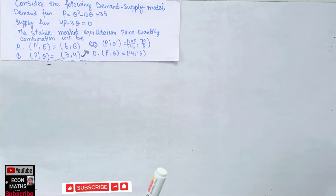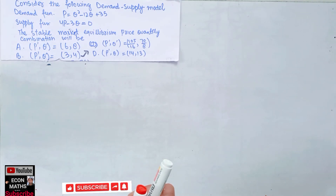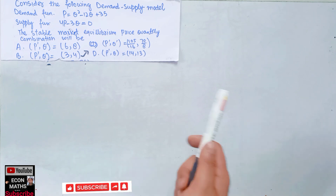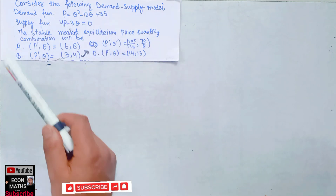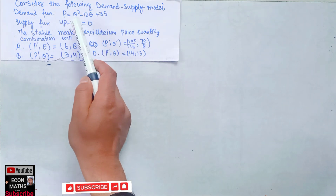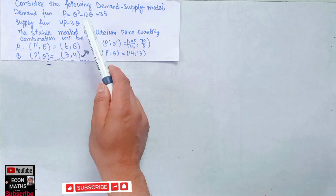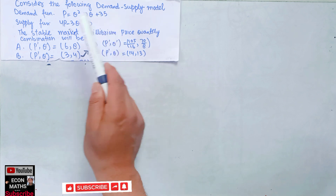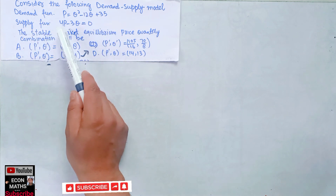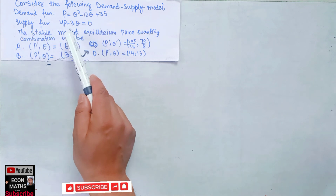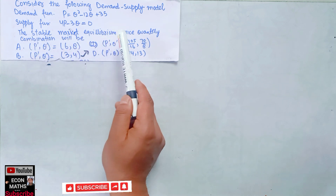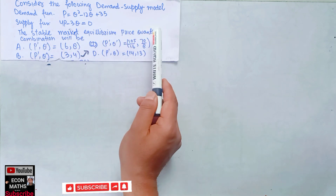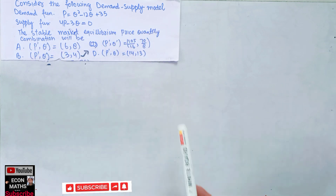A tricky question from the GATE Economics paper of 2021: consider the following demand-supply functions. The demand function is given as P = Q² - 2LQ + 35, and the supply function is given as 4P - 3Q = 0. We need to find the stable market equilibrium price-quantity combination from the given options.